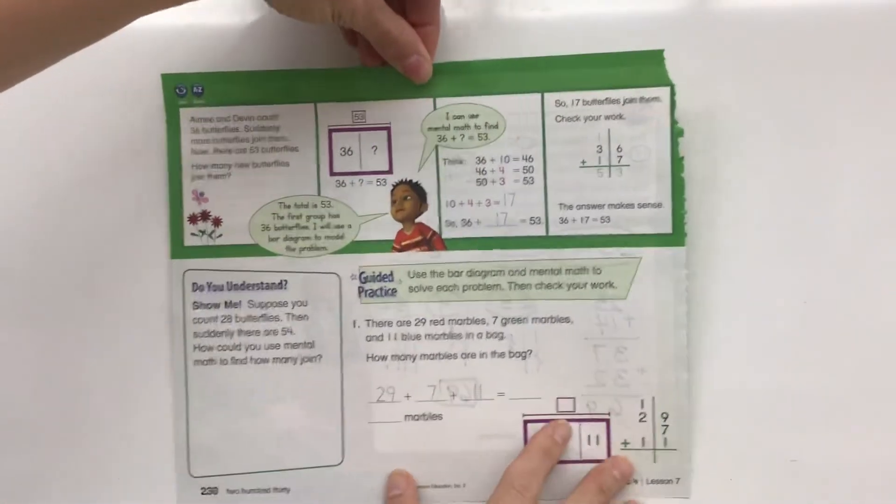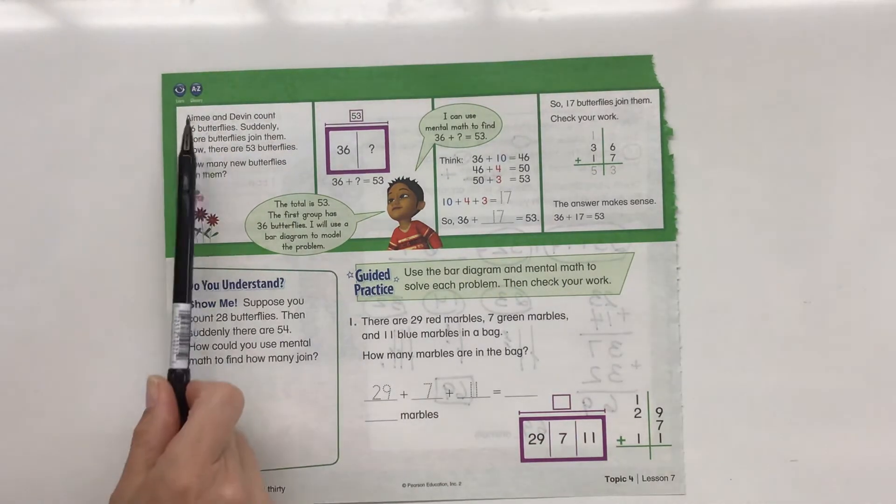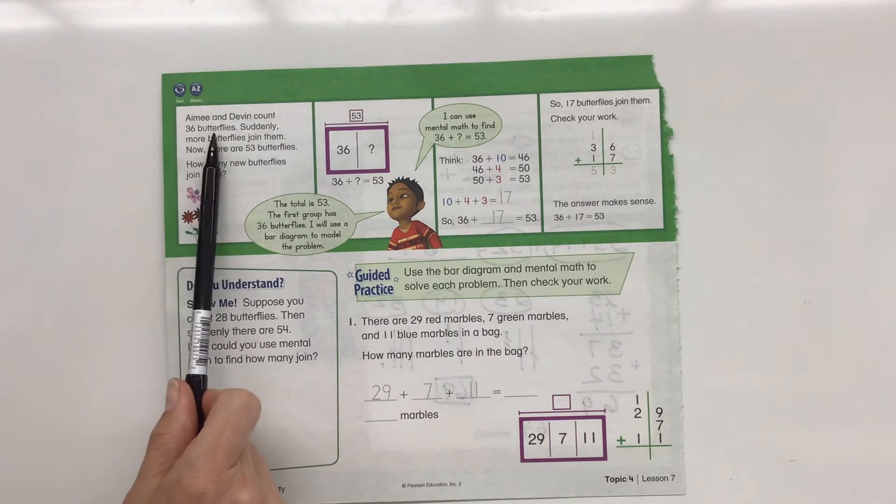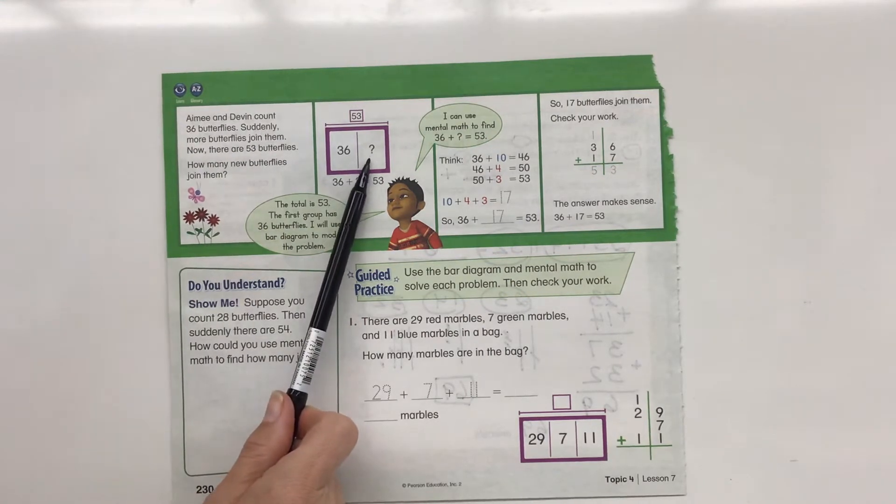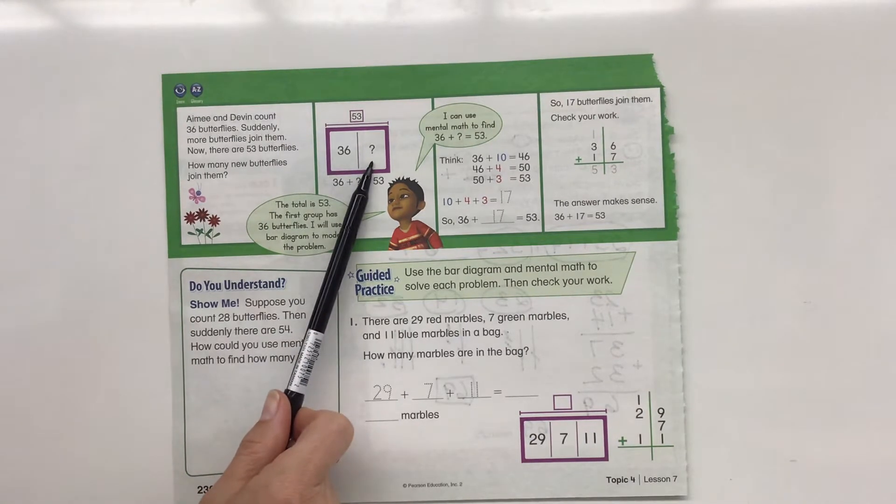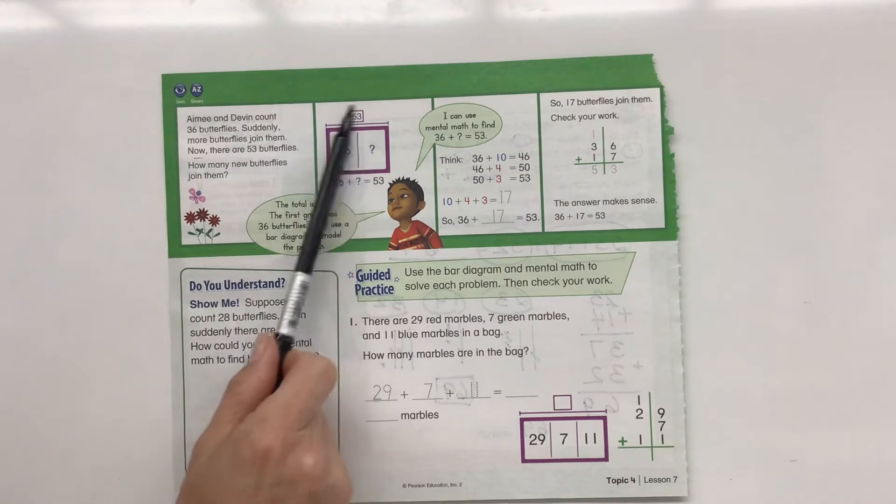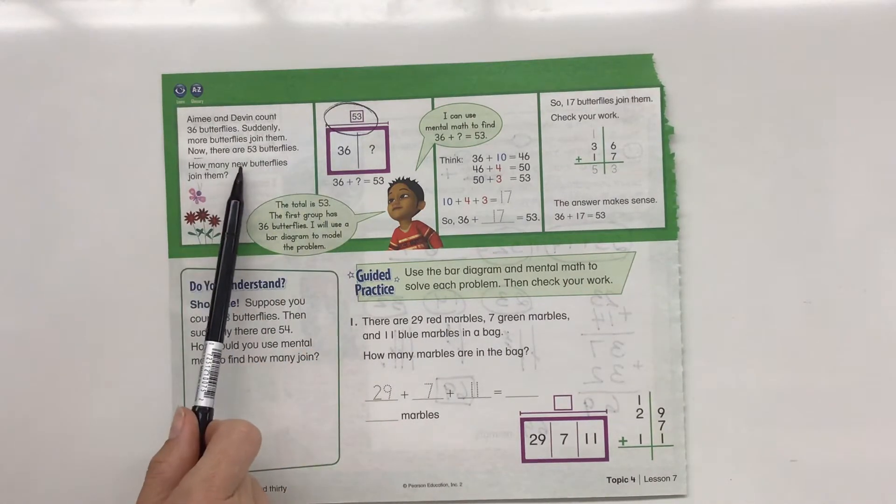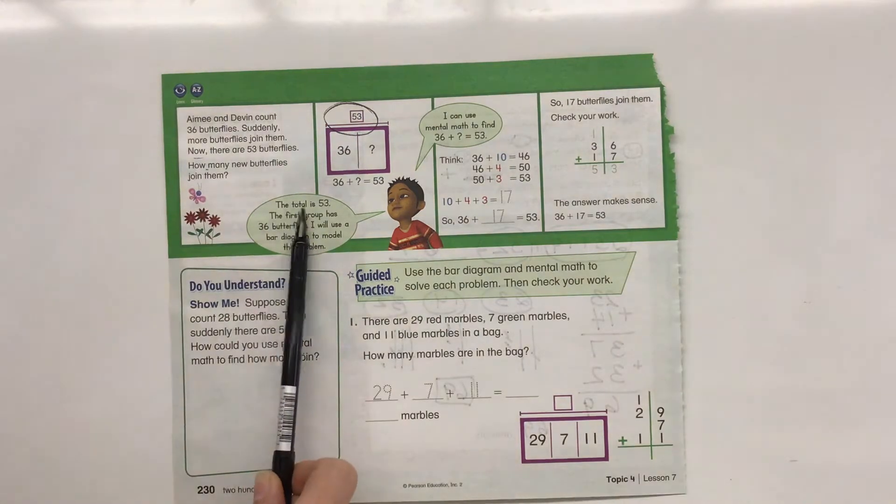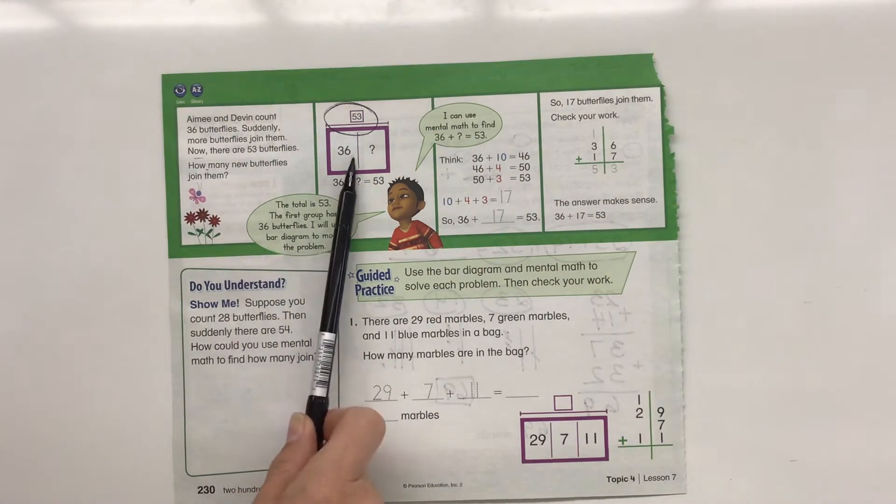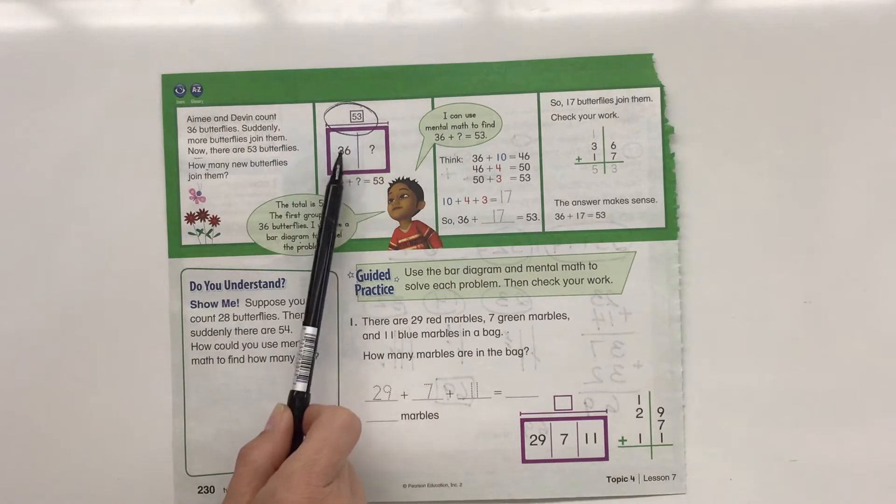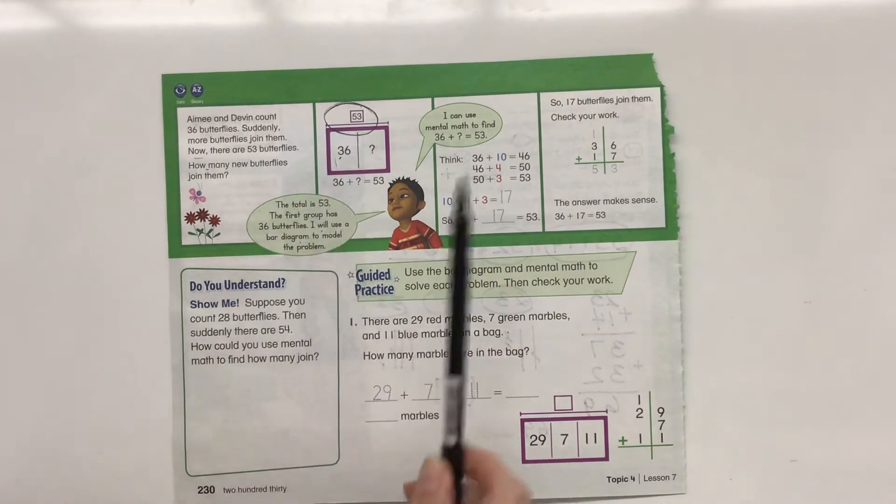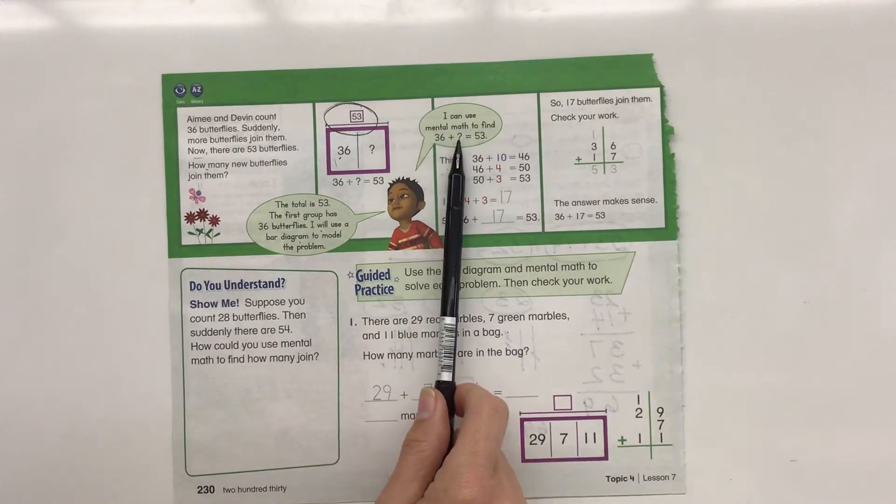Let's go ahead and go on to our back page. Let's read our comic strip together. Amy and Devin count 36 butterflies. Suddenly more butterflies join them. How many more? We don't know. We have a math mystery. So we have 36 and we get more butterflies. Now there are 53 butterflies total. How many new butterflies join them? The total is 53, the first group has 36 butterflies. I will use a bar diagram to model the problem.